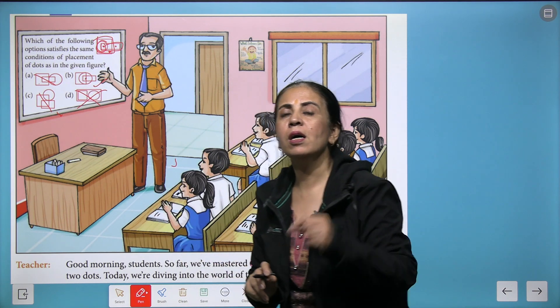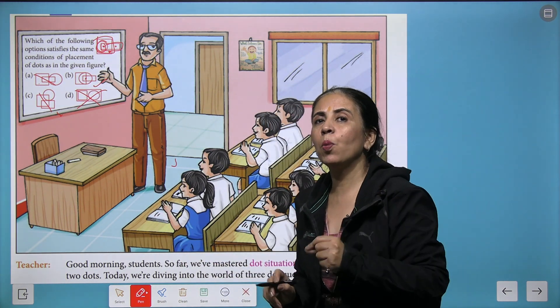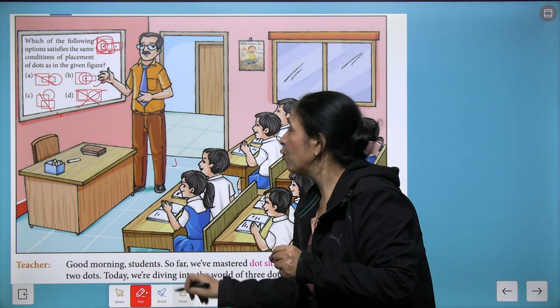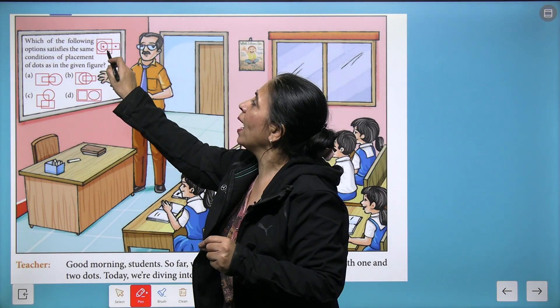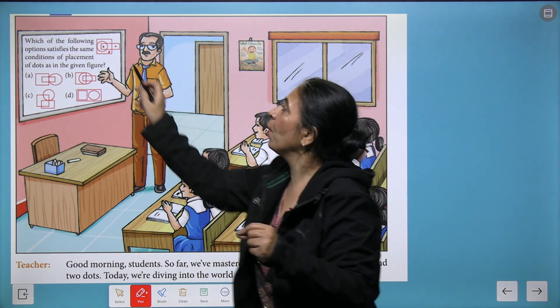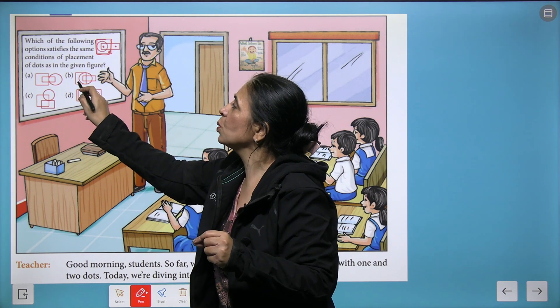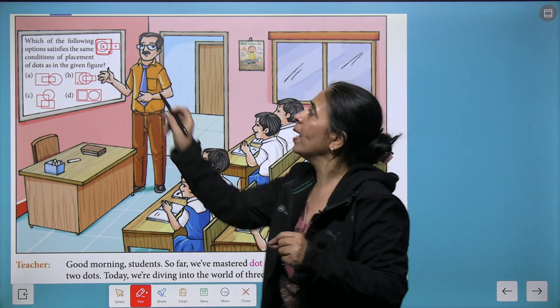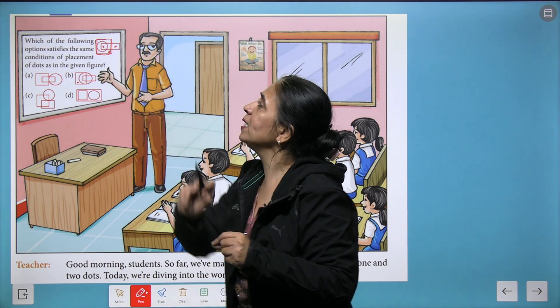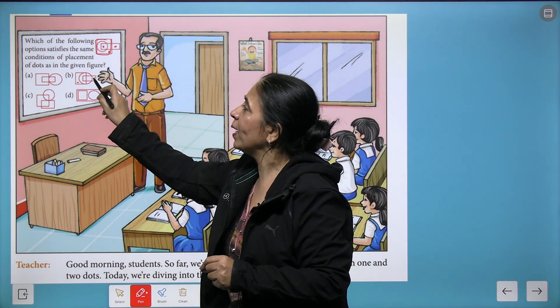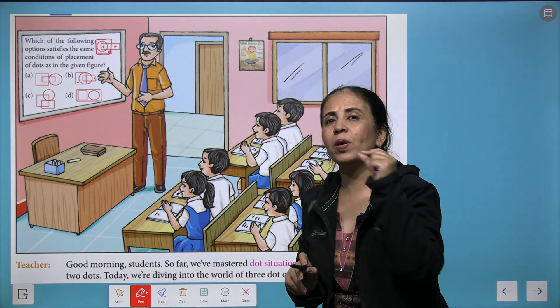In option B we can see that if I put a dot here, we get the area which is part of all three figures. Now let's look at the second point. This point exists only in the square, so we can place one point only in the square. This point exists only in the rectangle.